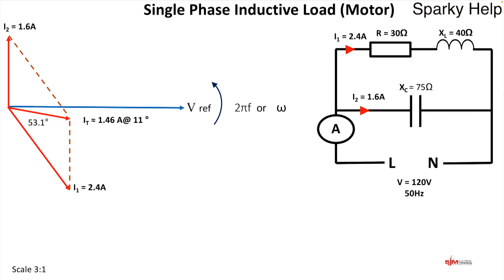At 11 degrees. Which is bizarre. When you think about it. 2.4 amps. 1.6 amps. It isn't actually 4 amps as we've discussed. Or thought it may have been. It actually drops to 1.46.